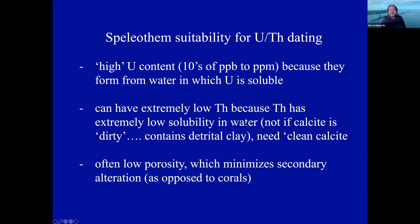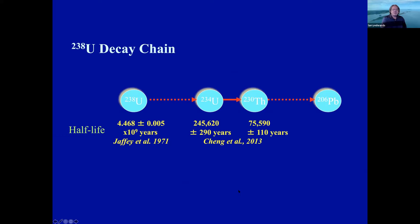If you want a speleothem to date, you don't want a dirty speleothem. You want stuff that's pure calcite — pure material that came from the water, contains uranium, and not thorium. If you have detrital clay, we refer to that colloquially as 'dirty,' and that brings with it thorium — and you need to correct for that. So relatively high uranium, low thorium if you get clean enough material, and low porosity — many of these samples have low porosity, minimizing secondary alteration. Corals are kind of the opposite of this, and we've fought that alteration from waters percolating through coral.